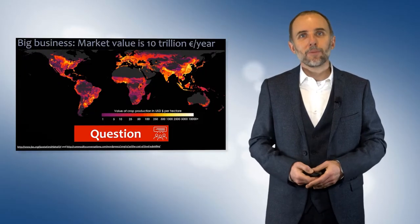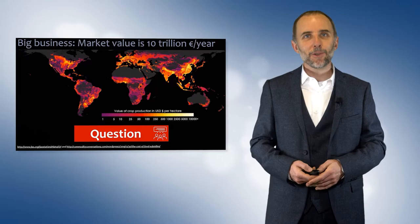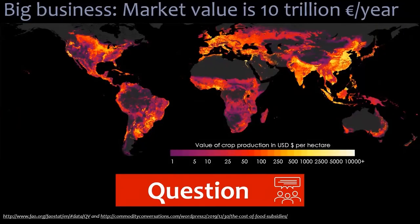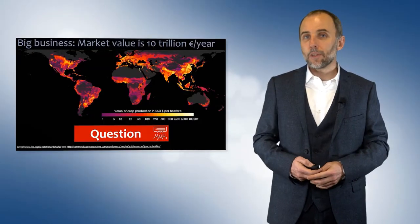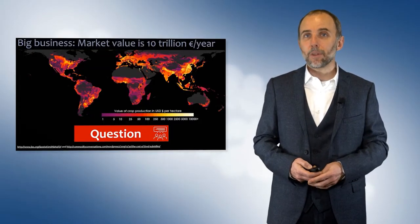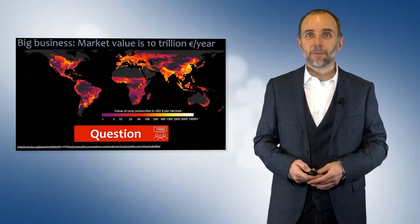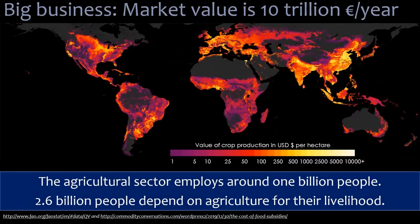This is an unusual map. It emphasizes that agriculture is a big business — the coloring shows the value of crop production per hectare. The areas in bright yellow are where we have the most value in agricultural production. So here's a question: how many people's livelihoods depend on farming? The agricultural sector employs around 1 billion people, and 2.6 billion people depend on agriculture for their livelihoods. So it's a large part of our economy and society.